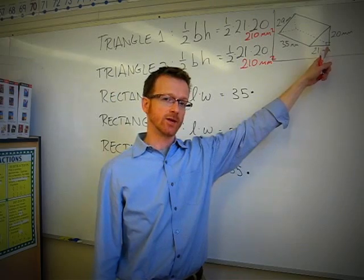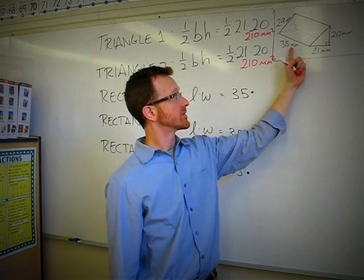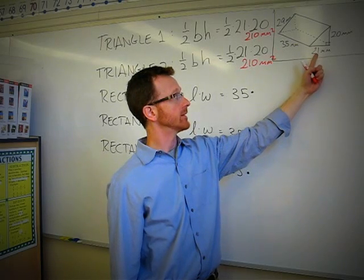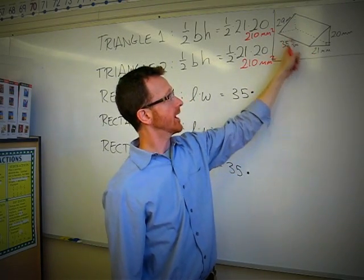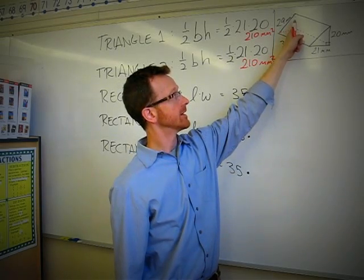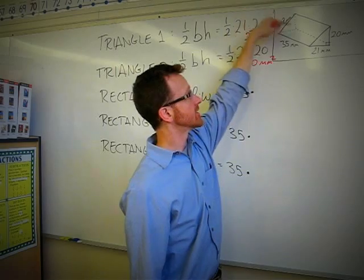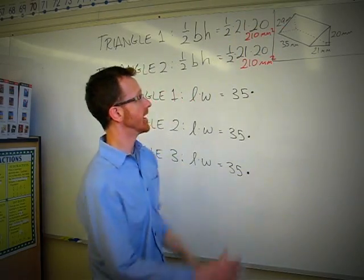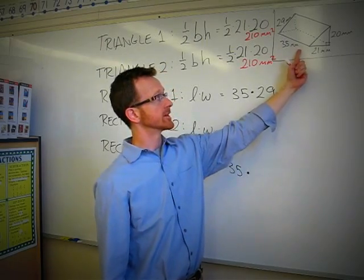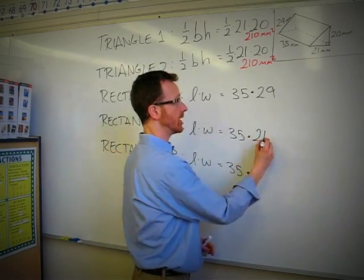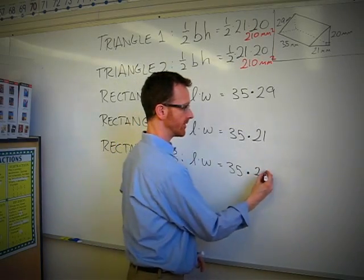But the width is different for each of these rectangles. This width is 21. So the bottom rectangle is 35 by 21. This facing rectangle here is 35 by 29. And then the one on the back is 35 by 20. So I believe we said this would be rectangle one, 35 by 29. Rectangle two will be the bottom rectangle, 35 by 21. And rectangle three will be the rectangle on the side, 35 by 20.